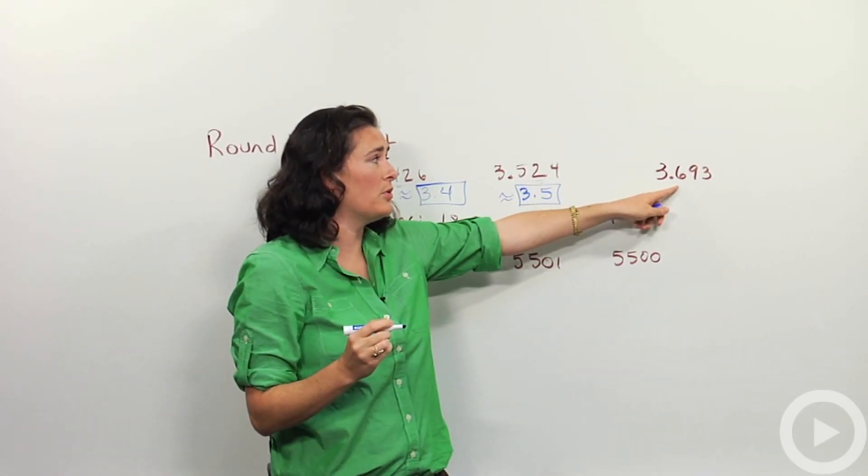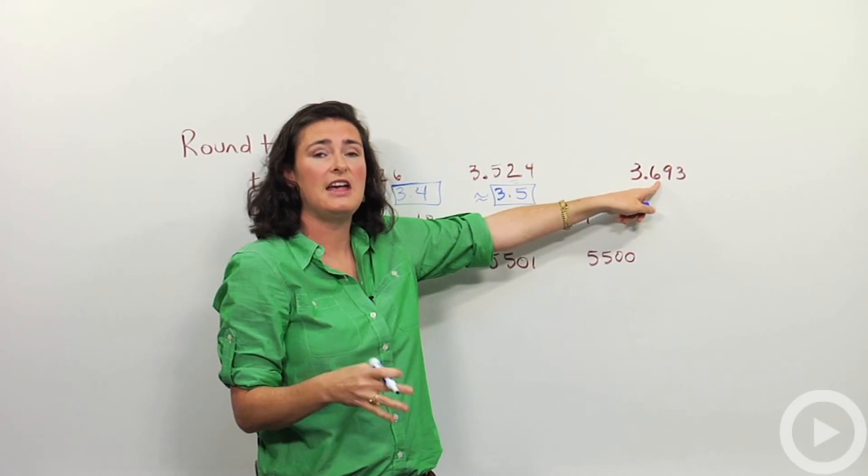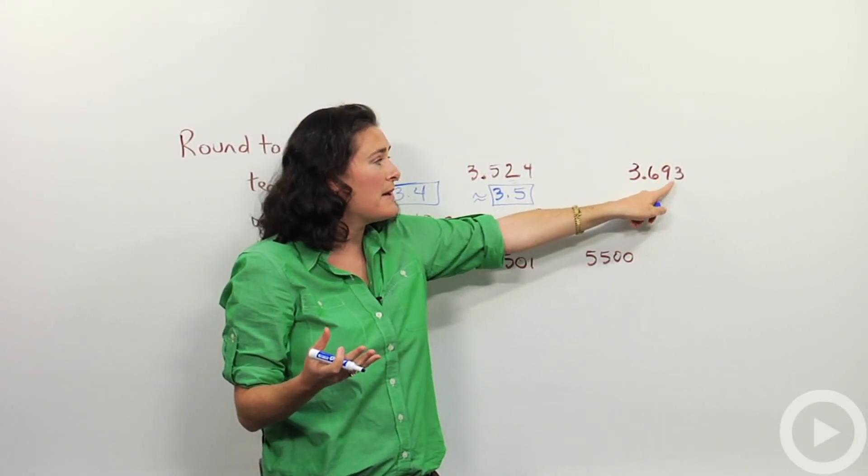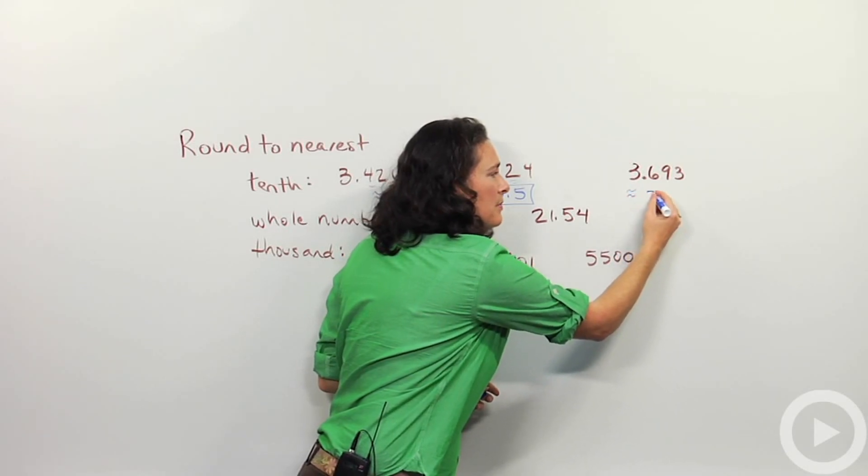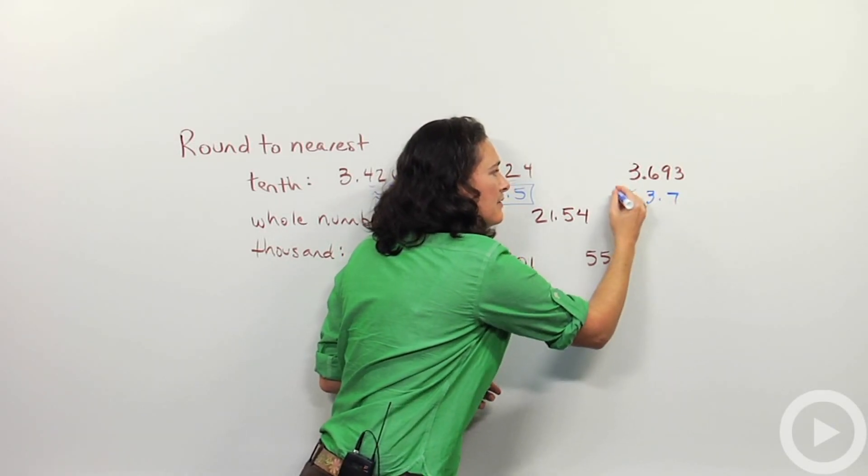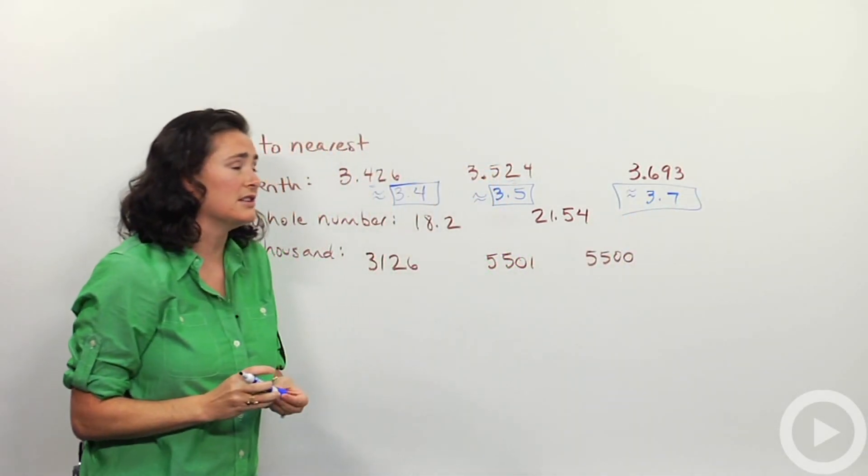Next one, I have three point six nine three. The six is the tenth. That's the one that might change based on this nine right here. And the nine is bigger than five. So it's going to round up. This will become now three point seven. That's how we do rounding to the nearest tenth.